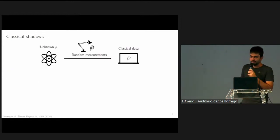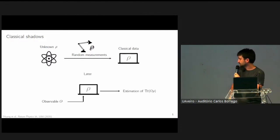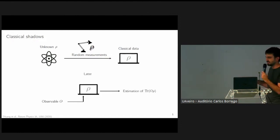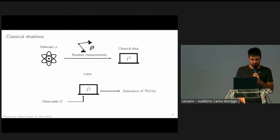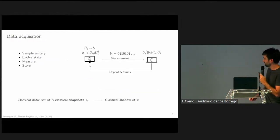First of all, classical shadows is a protocol that was proposed by Robert Chuang, King, and Preskill in 2020, in which one can use randomized measurements to get a classical representation of some unknown quantum state. By classical representation, I mean that later when somebody comes over with an observable, the classical data on the computer can be used to estimate the expectation value of the observable. I'm going to very briefly describe how this works more in detail.